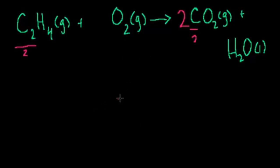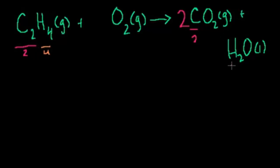Now let me move to the hydrogens. I want to do the oxygens last, because I can just set that to whatever I want without messing up any of the other atoms. On this side of the equation I have four hydrogen atoms. On the other side I have two hydrogen atoms right there. So I want four on both sides, so let me put a 2 in front of the water.